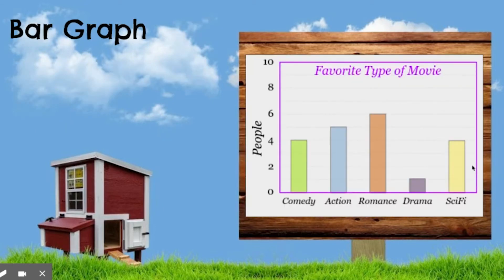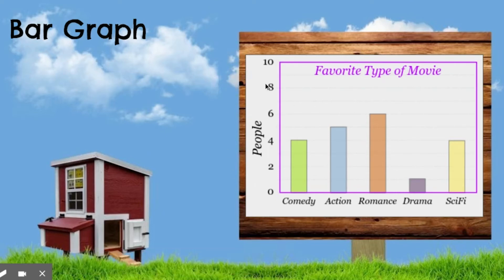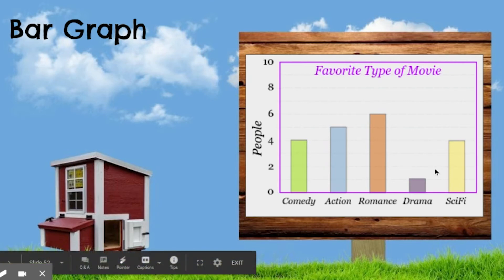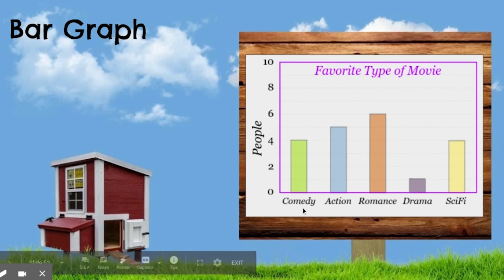Let's get into bar graphs. Bar graphs are going to be very similar. You're going to have categorical data — you put your words on the bottom. Sometimes you might see them on the side, but often they're on the bottom and the bars go up. You have the number on the side — categories down here, frequency over there, and then your title. In this example, comedy was 4, action was 5 — halfway between 4 and 6 — romance was 6, drama was 1 — halfway between 0 and 2 — and sci-fi was 4. That's how you read a bar graph.